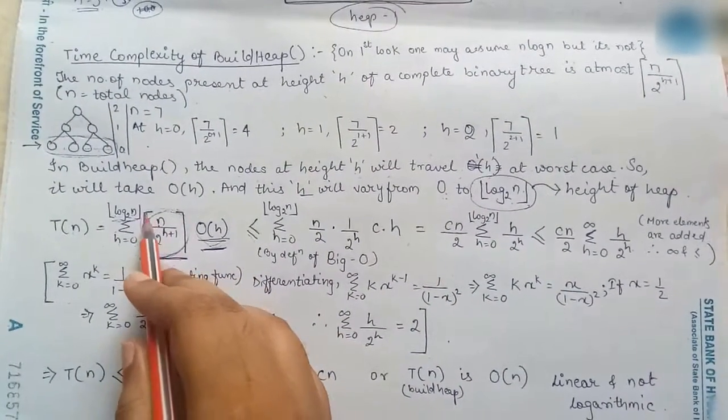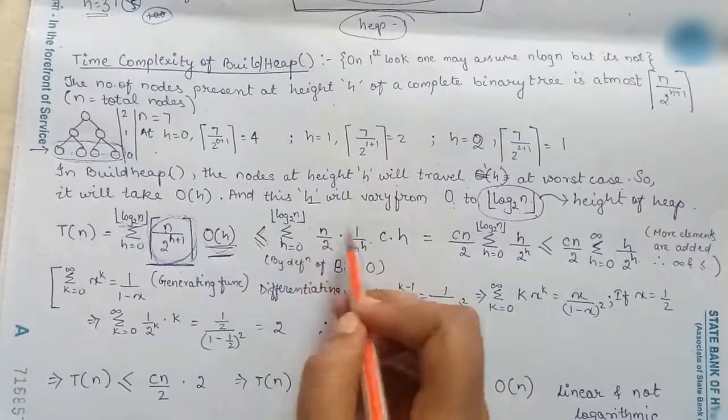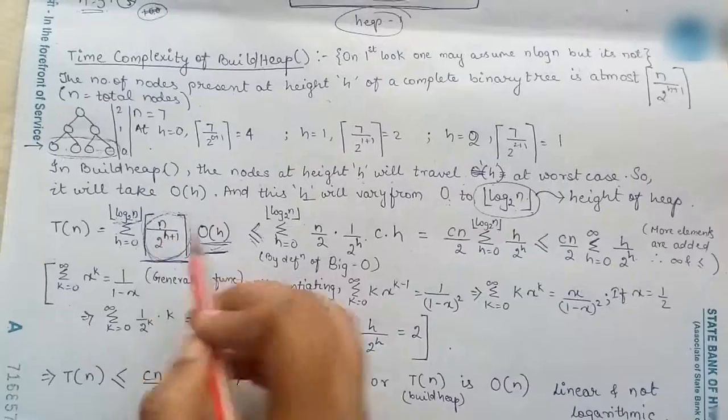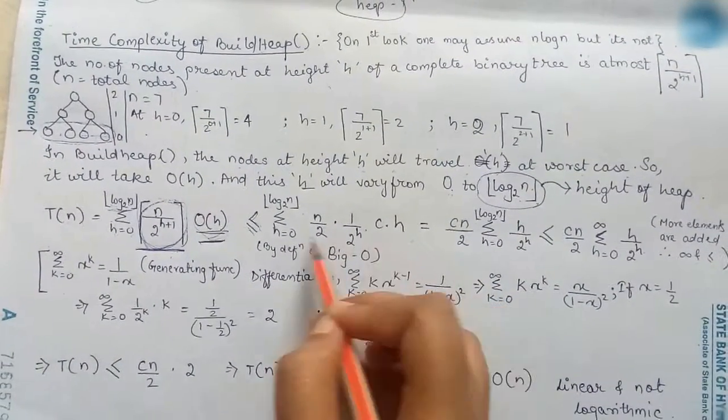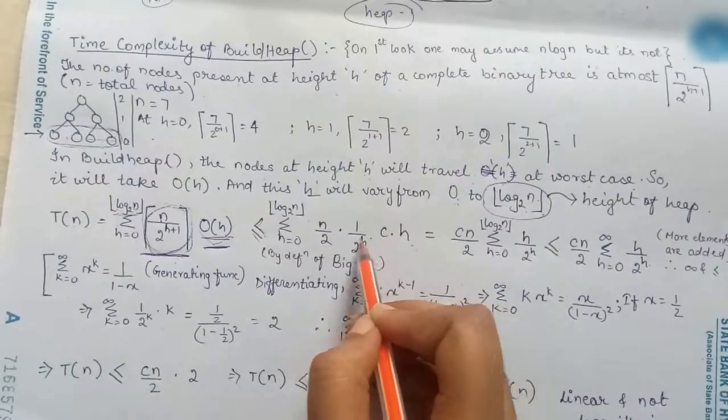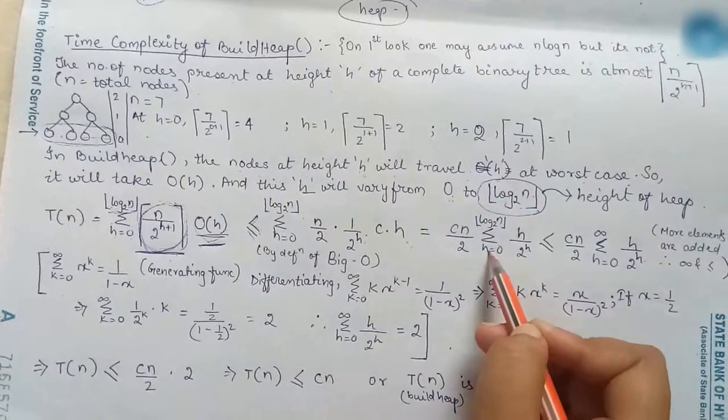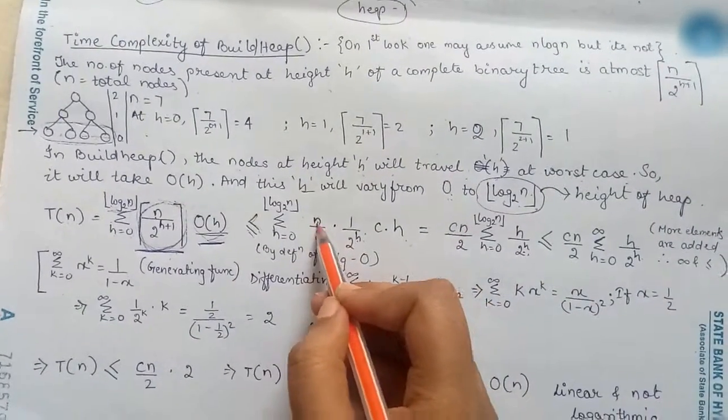And then this is floor function, sorry ceiling function and it is less than equal to the normal inside thing so by definition of big O we have made this thing and this is equal to we have kept the variable h the terms with the variable h inside and the other terms like n by 2 and c outside.